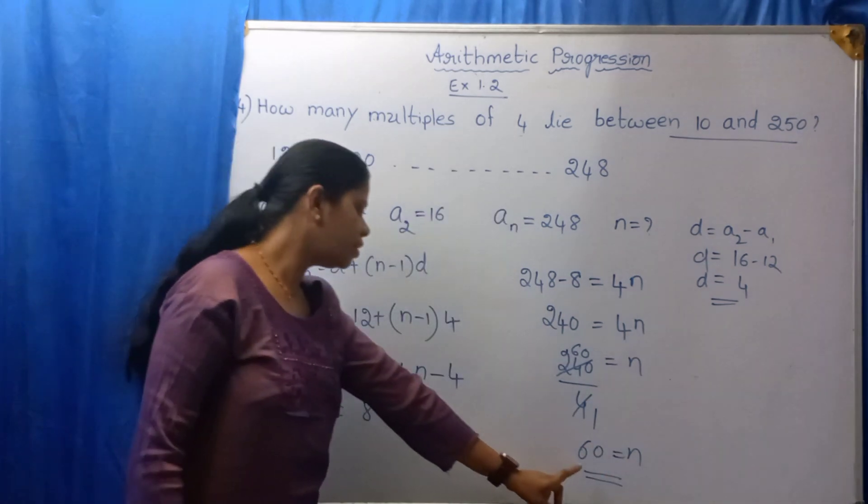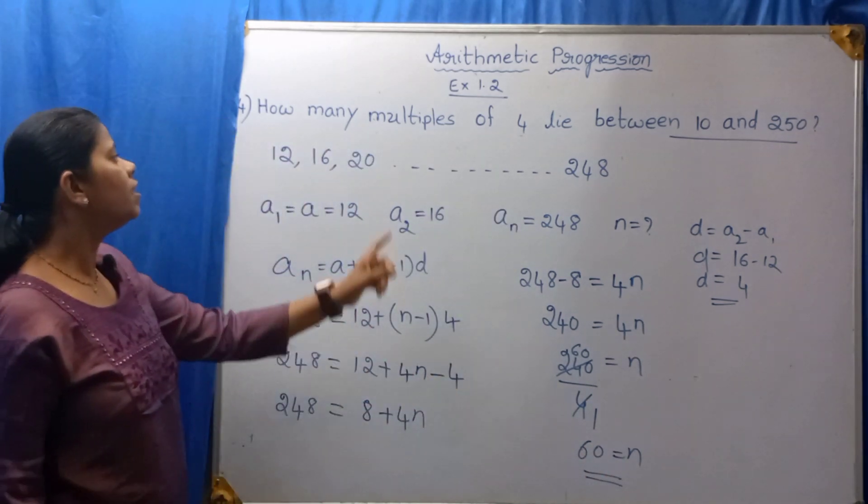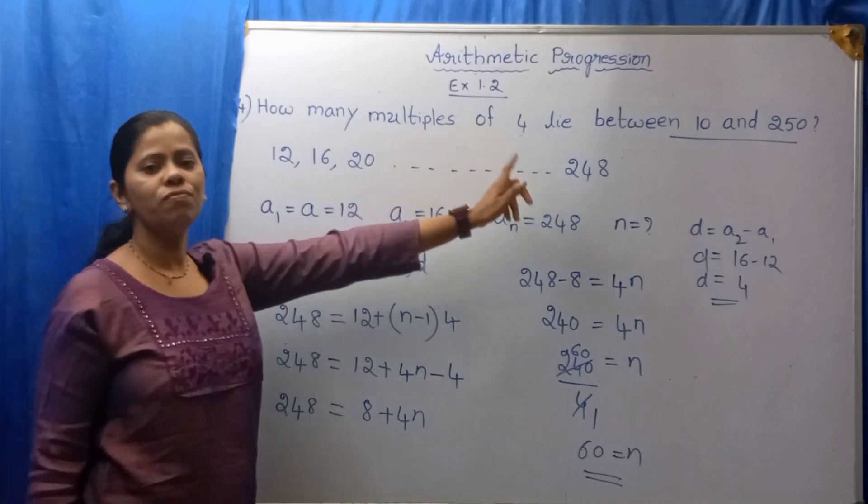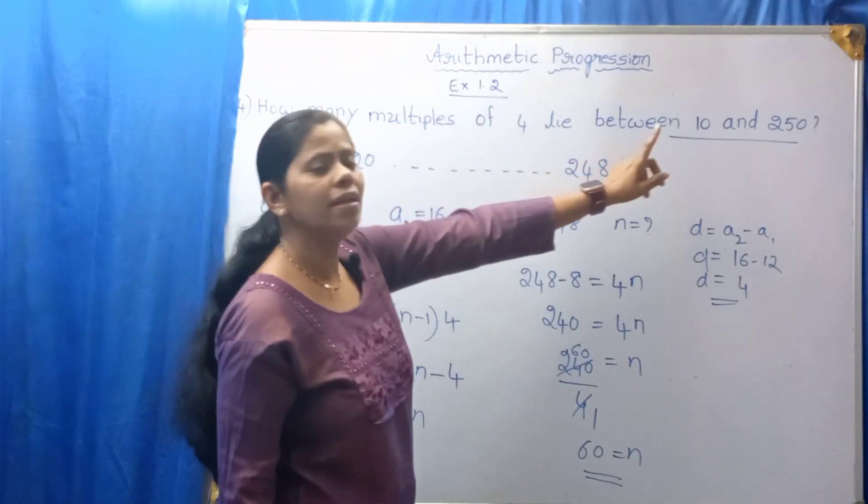The meaning of the question is, there are 60 numbers which are the multiples of 4 between 10 and 250.